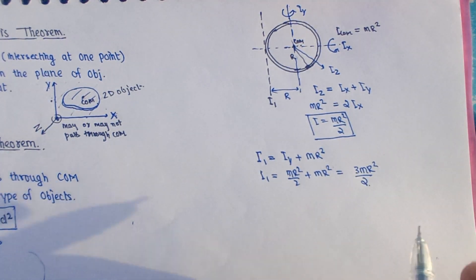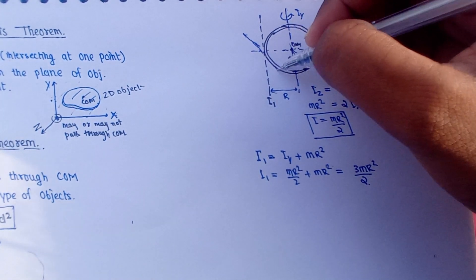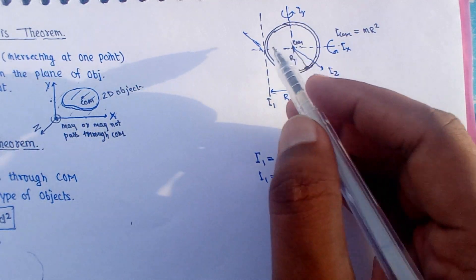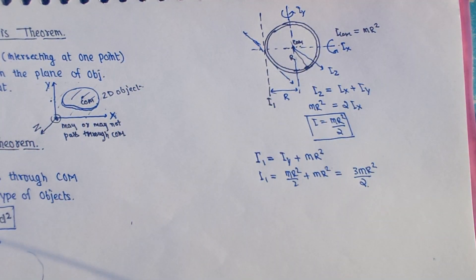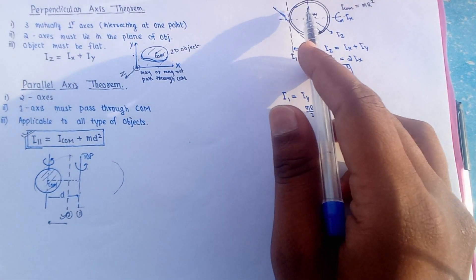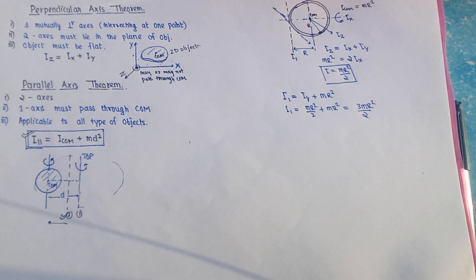Similarly, if you are asked to rotate about an axis parallel to the z-axis passing through the tangent, you can apply the parallel axis theorem again. We can rotate any object — ring, plate, sphere — about any axis. It depends on the question.